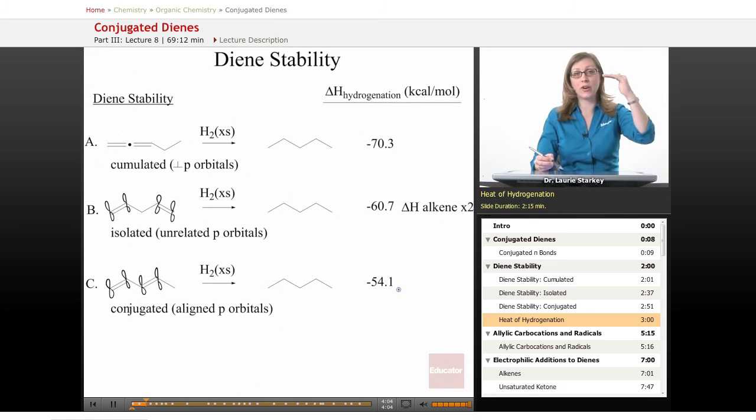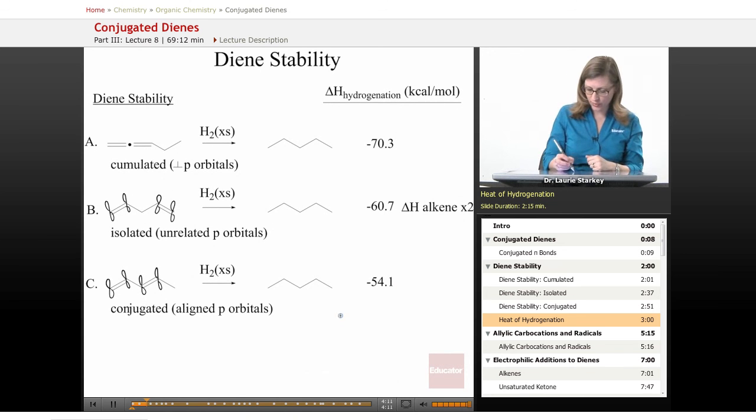And when you allow them to be conjugated with one another, you have a lot less energy being released, which means your diene must have started out at lower energy. So again, if we do a quick little energy diagram comparing these three, they're all going to the same product, the pentane product.